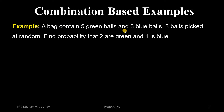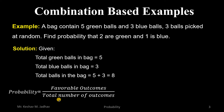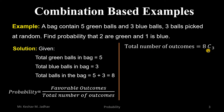Next example: a bag contains 5 green balls and 3 blue balls. 3 balls are picked at random. Find the probability that 2 are green and 1 is blue. Total green balls: 5, total blue balls: 3, total balls: 8. We need to select 3 balls from 8. Probability equals favorable outcomes divided by total number of outcomes. Total number of outcomes is the number of combinations of selecting 3 balls from 8 balls.